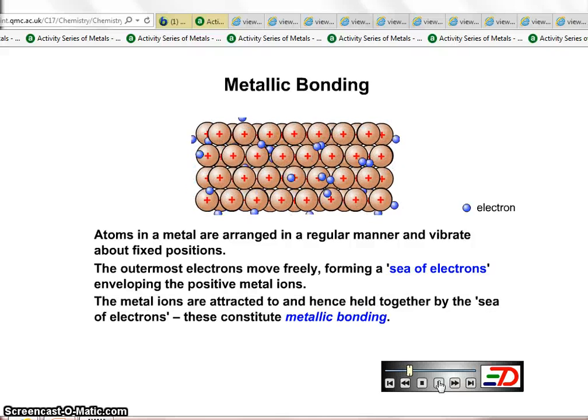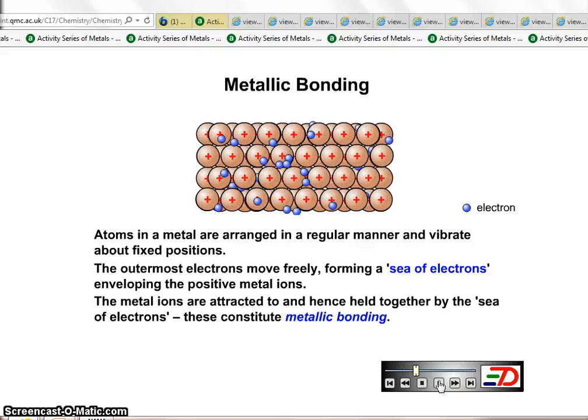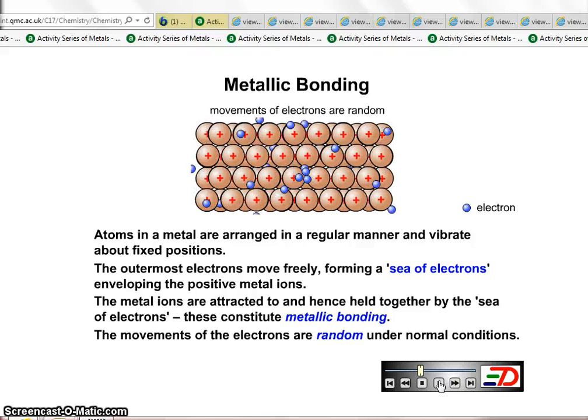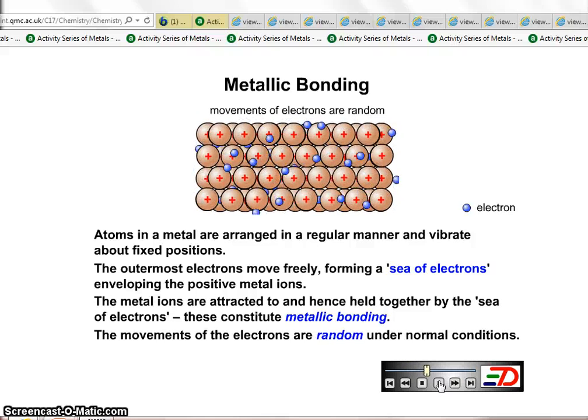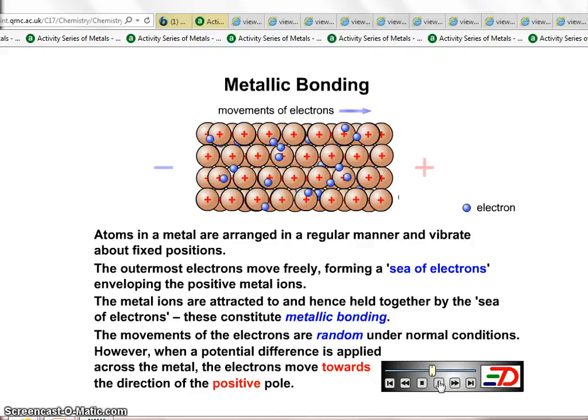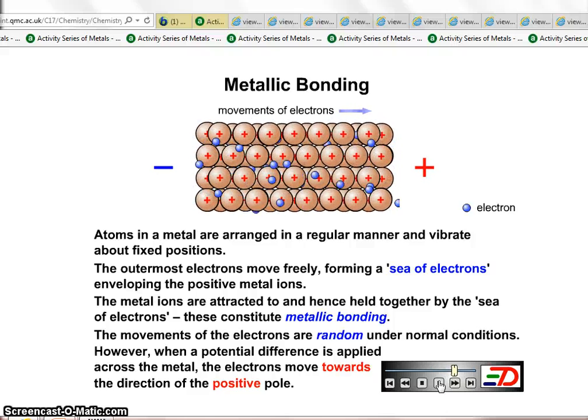We usually describe the electrons not as a sea of electrons but delocalized electrons. Again, the metallic bonding is shown there. Simply the attraction between the positive metal ions and those negatively charged delocalized electrons.